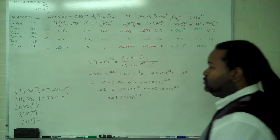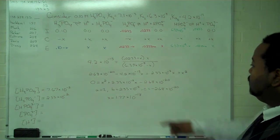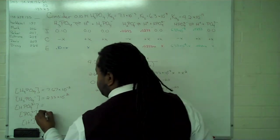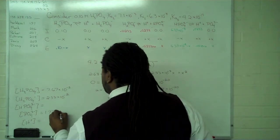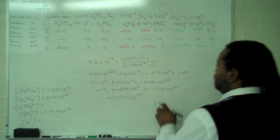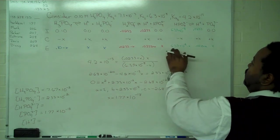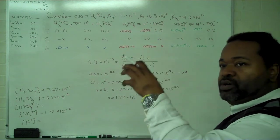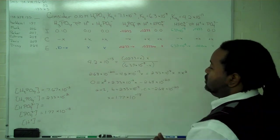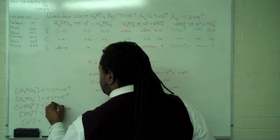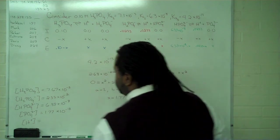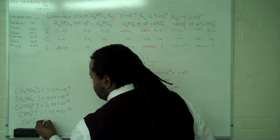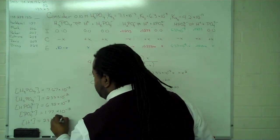So plugging these values into the quadratic formula will give us a value of x that is 1.77 times 10 to the negative 18. So now that we have this value, we see that corresponds to the bare phosphate ion concentration: 1.77 times 10 to the minus 18. We know that 10 to the minus 8 and 10 to the minus 18 are so far apart in terms of magnitude that we can conclude 6.39 times 10 to the negative 8 is our concentration here. And finally, we know how much hydrogen we're going to have: 2.33 times 10 to the negative 2.